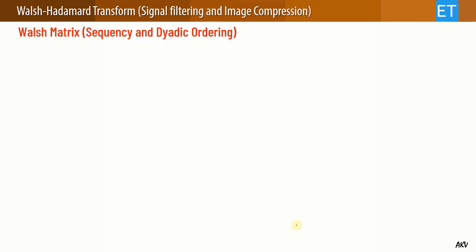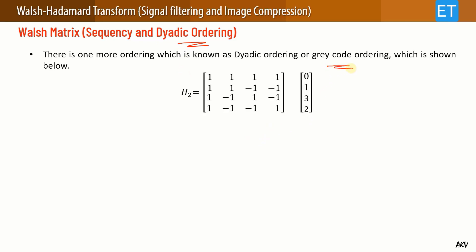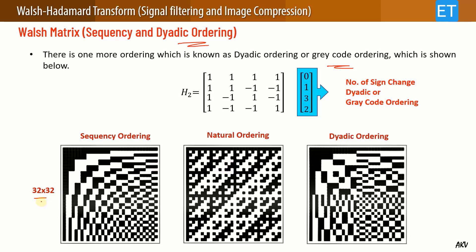There is another ordering known as dyadic ordering, which follows the order of Gray code generation — rows are rearranged in the sequence 0, 1, 3, 2. A 32×32 matrix example visually shows all three orderings: the natural ordering gives the Hadamard matrix, the sequency ordering gives the Walsh matrix, and the dyadic ordering follows the Gray code pattern. You can visually compare how these three matrices look.